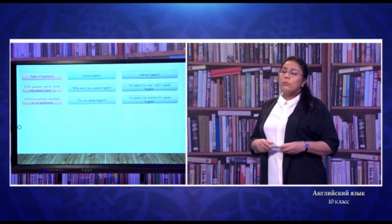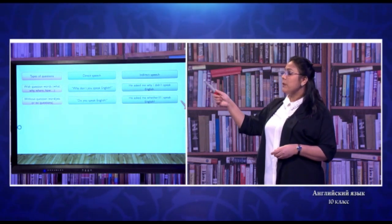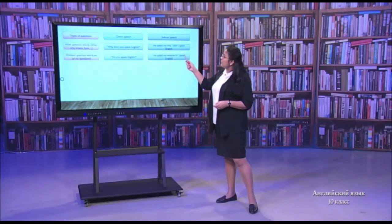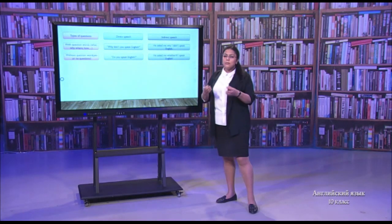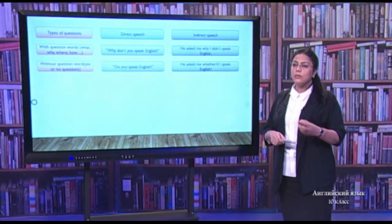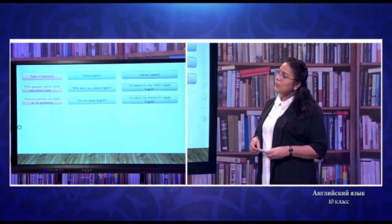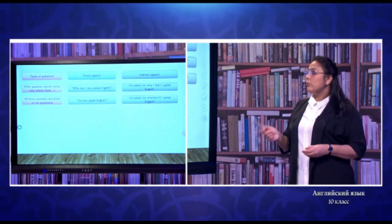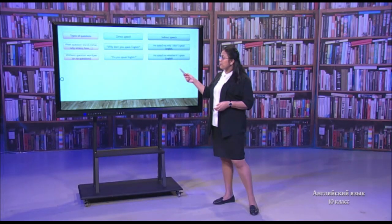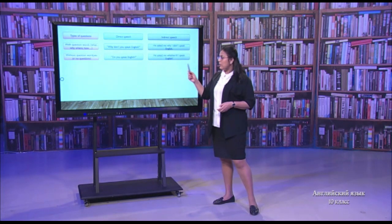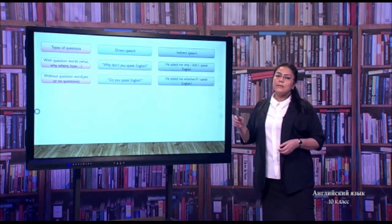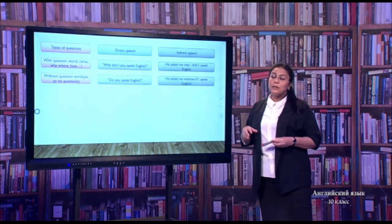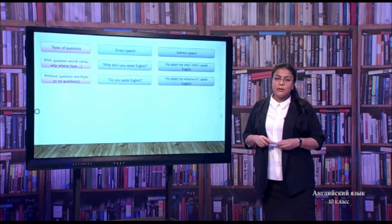If we are using questions with 'what', 'why', 'where', 'how', here we have an example: 'Why don't you speak English?' If we change it into indirect speech, we say 'He asked me' — we leave the same question word 'why', but we change the person and the sentence into a statement: 'He asked me why I didn't speak English.' Next, for general yes/no questions: 'Did you speak English?' If we change it into indirect, we say 'He asked me' and instead of a question word, we use 'if' or 'whether', then continue as a statement: 'He asked me whether I could speak English.'